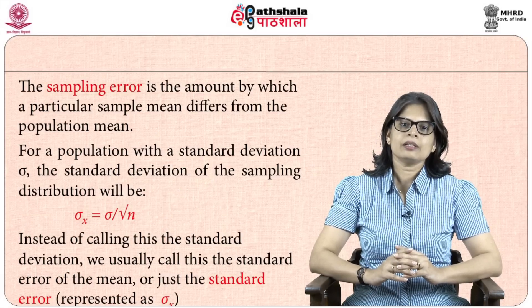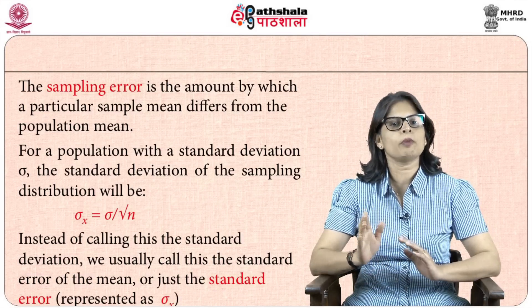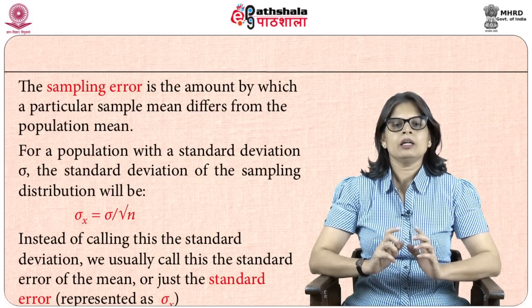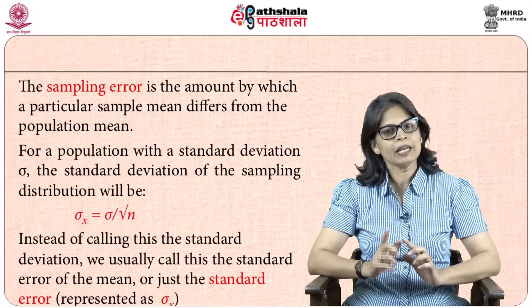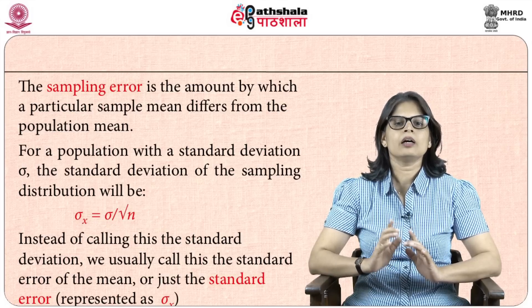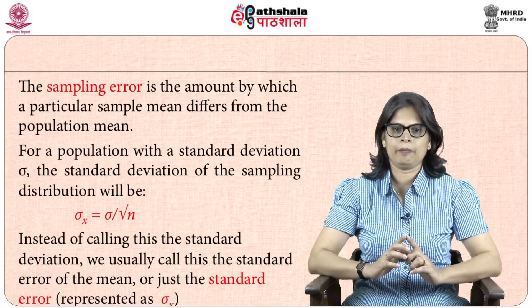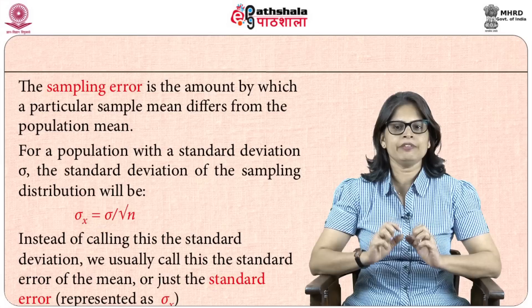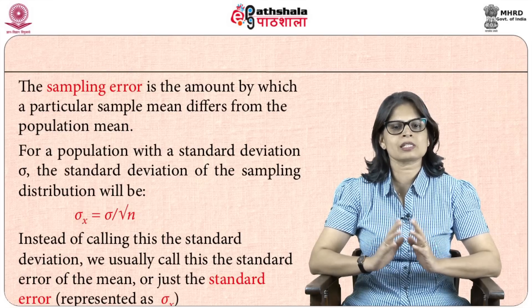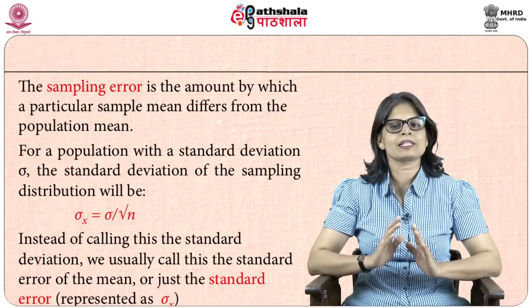The sampling error is the amount by which a particular sample mean differs from the population mean. For a population with standard deviation sigma, the standard deviation of the sampling distribution is sigma-x equal to sigma divided by the square root of the sample size n. This is usually called the standard error of the mean, or just the standard error, represented by sigma suffix small x.